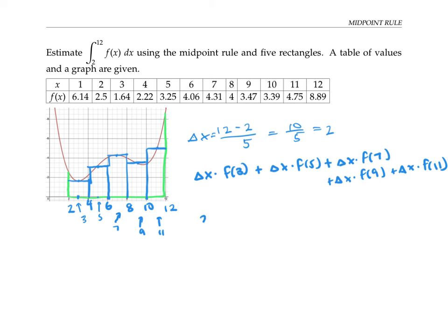Delta x is always 2, and I can get the function's values at the midpoints either by estimating from the curve or, more accurately, from looking at the table. For example, f of 3 is 1.64. I add these numbers up on my calculator to get 34.84, and that's my estimate of the value of the integral.